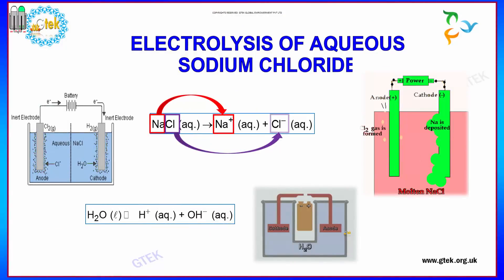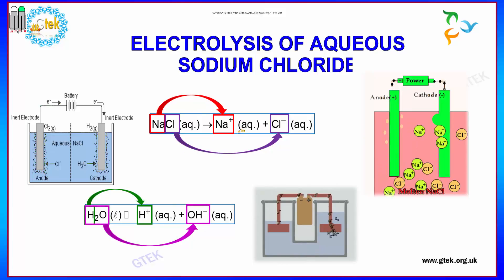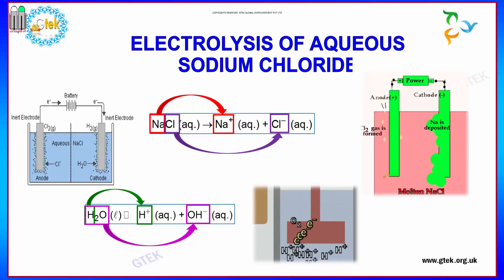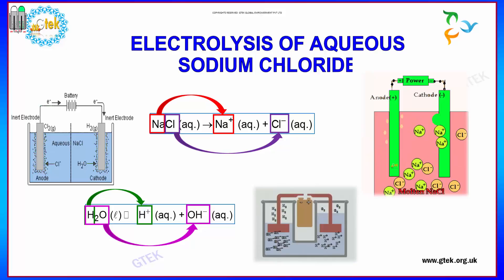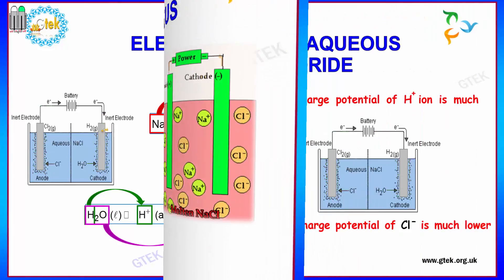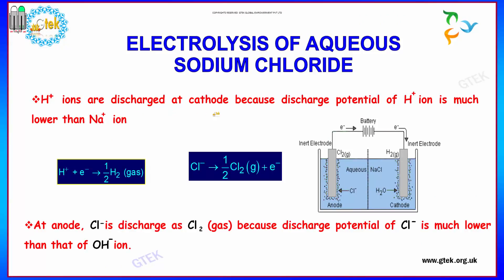In the process, sodium is deposited and chlorine gas is formed and emitted. In aqueous sodium chloride, the anode and cathode are present and electrons are passed. H+ ions are discharged at the cathode because the discharge potential of H+ ions is much lower than that of Na+ ions. At the anode, chlorine is discharged as chlorine gas because the discharge potential of chlorine is much lower than that of OH- ions.